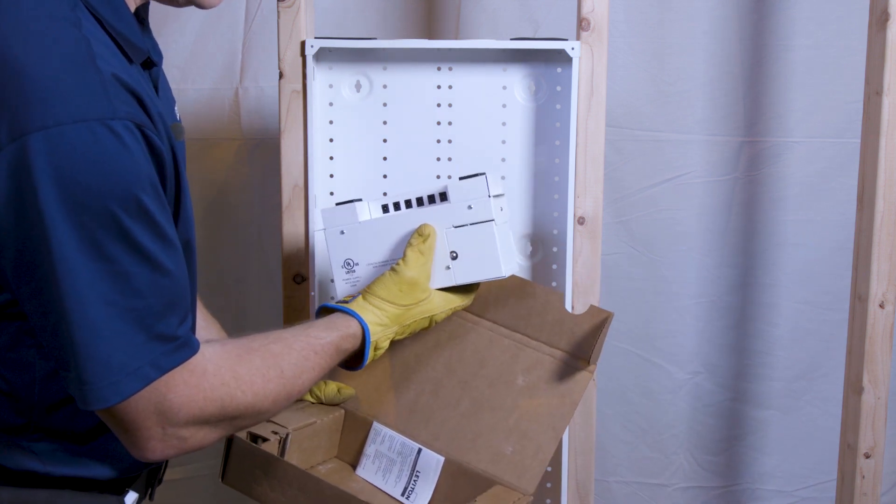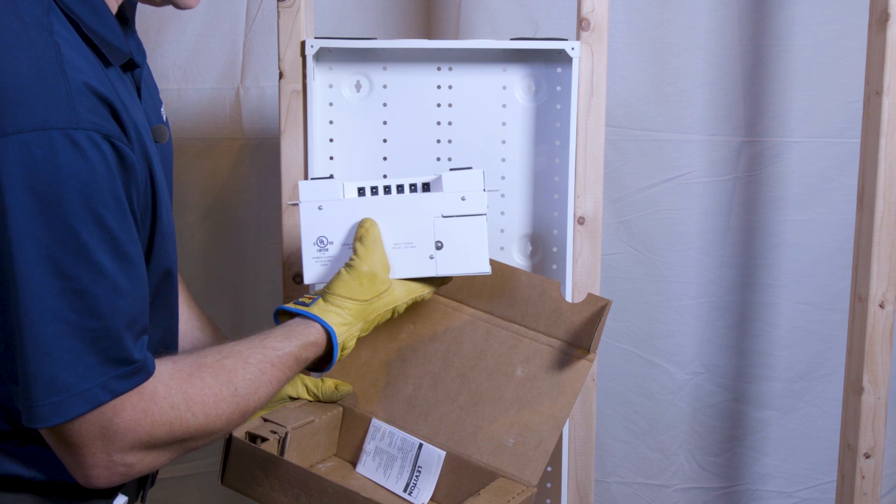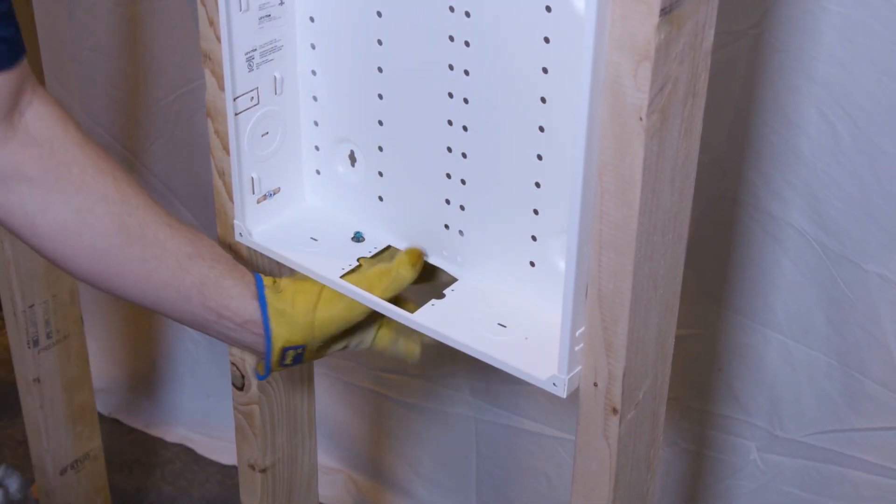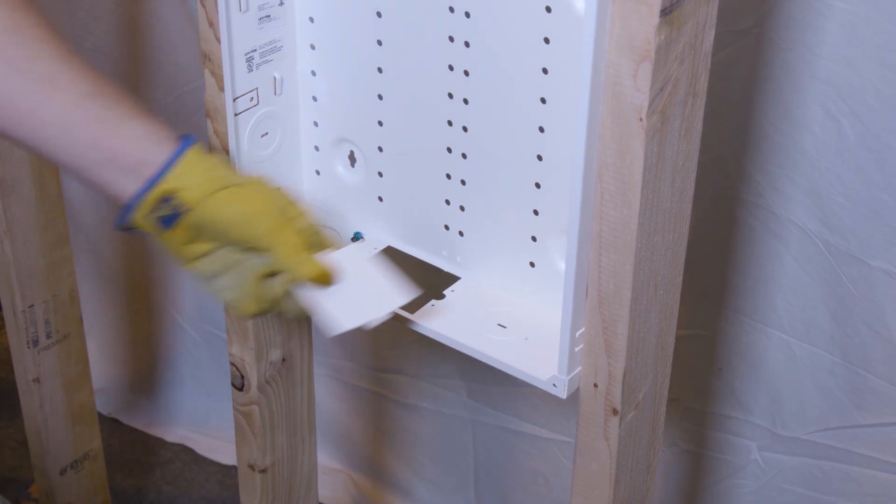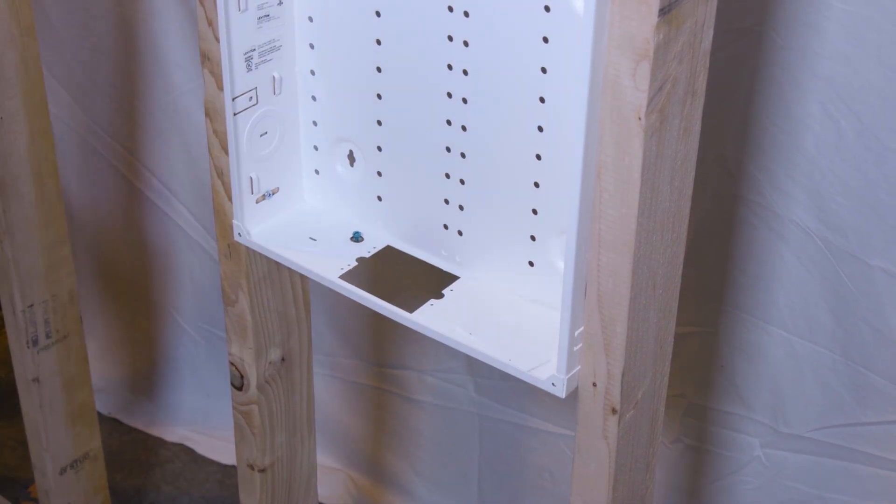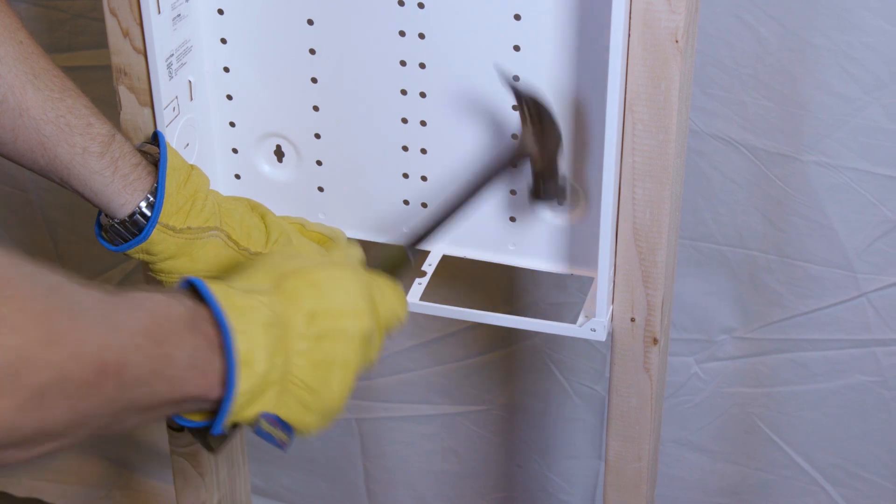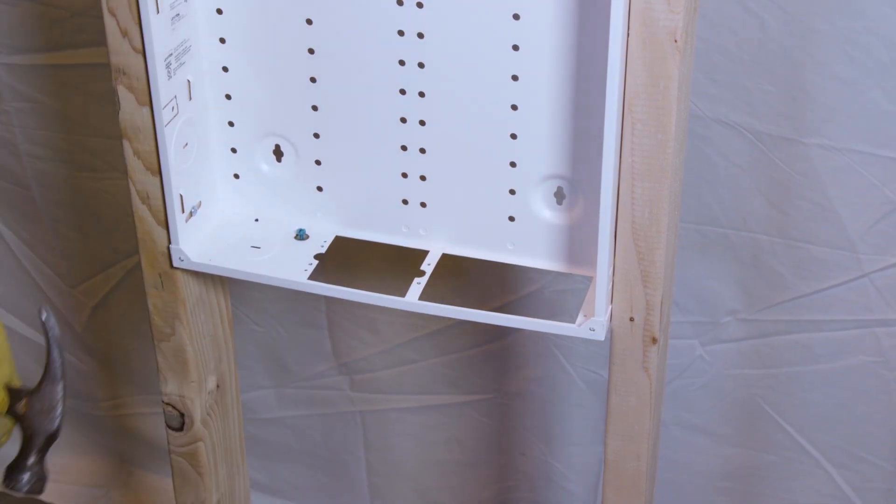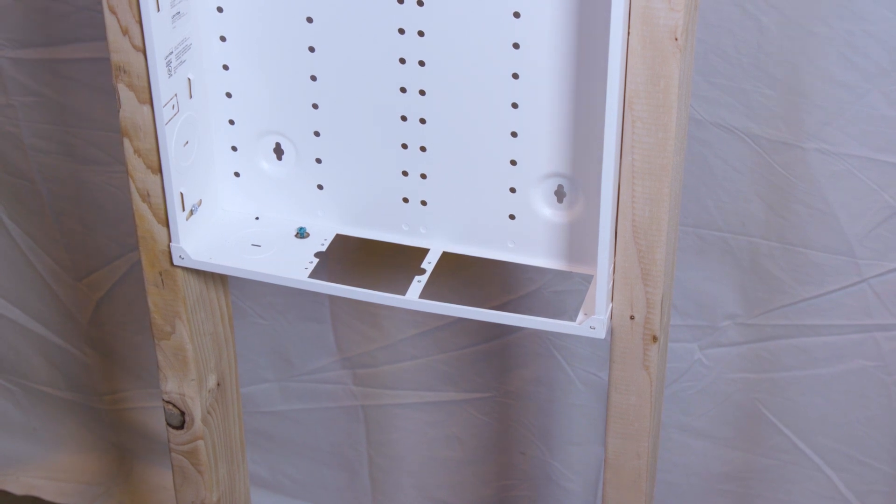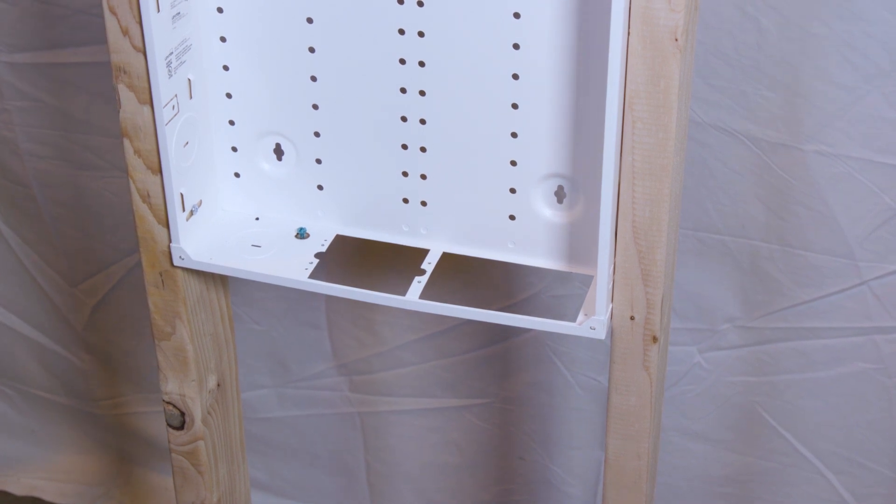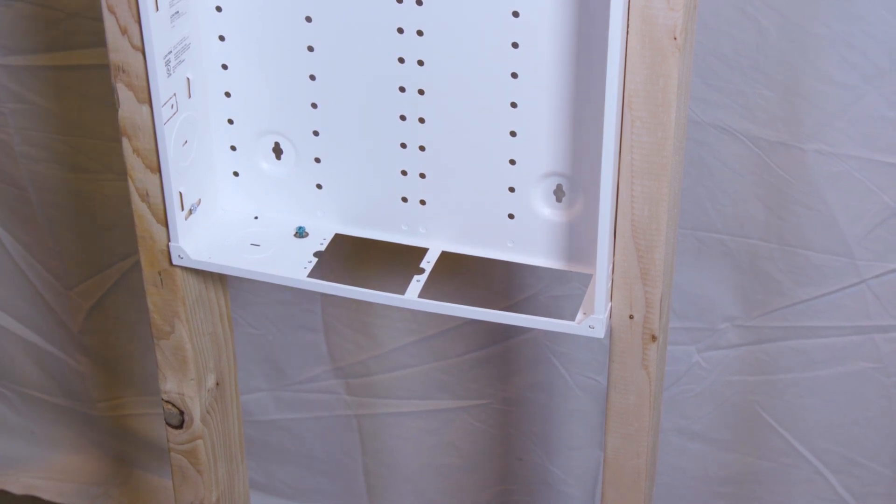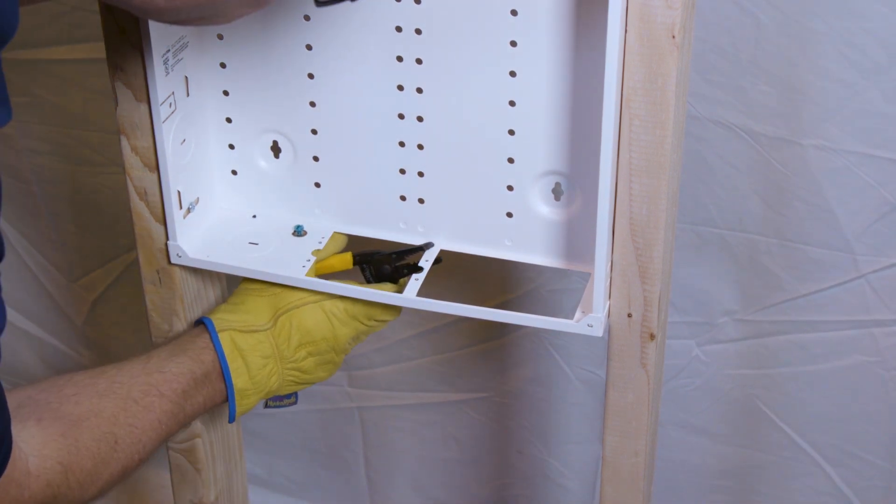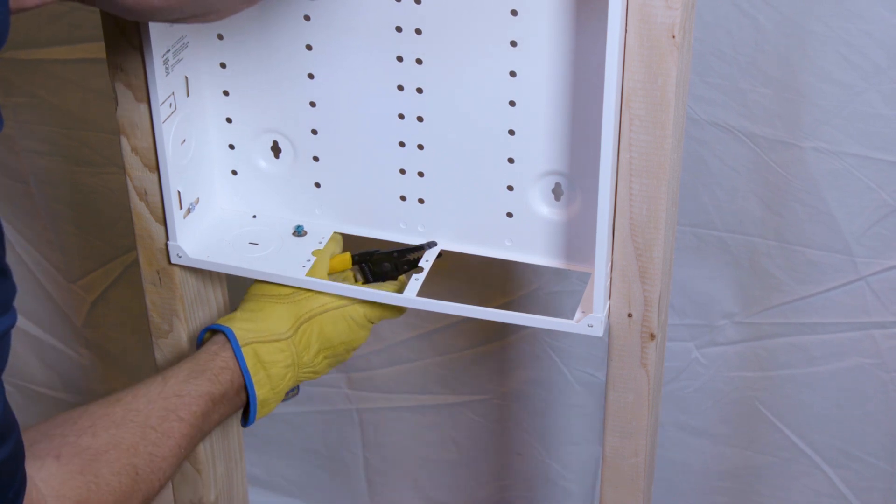This installs in the bottom of the Structure Media Center and it uses the full-size opening just like that. We get our set of pliers, now those two pieces are out we get our pliers, and twist this way to break it off.